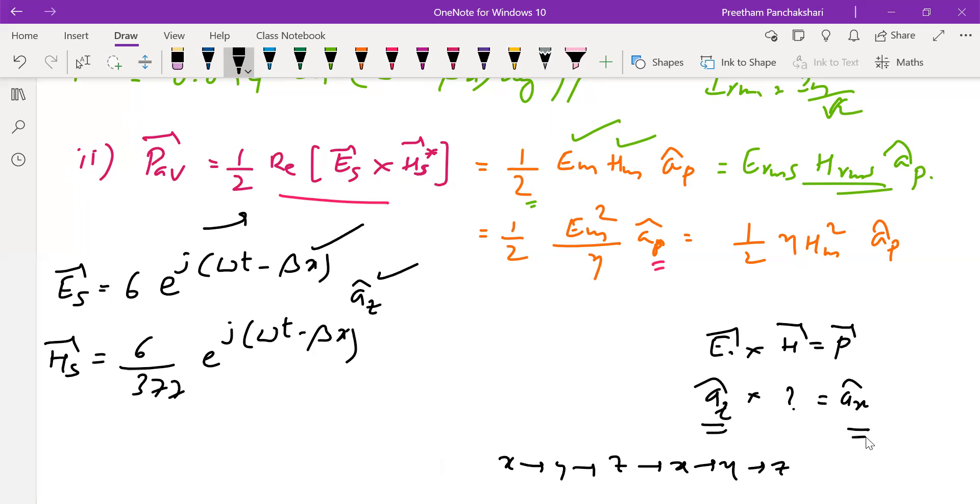This is fixed. After z, what is expected is x. Here x should come, but already x is there. So it should be y now. Because of this interchange, this becomes minus â_y. That's why this is going to be minus â_y.